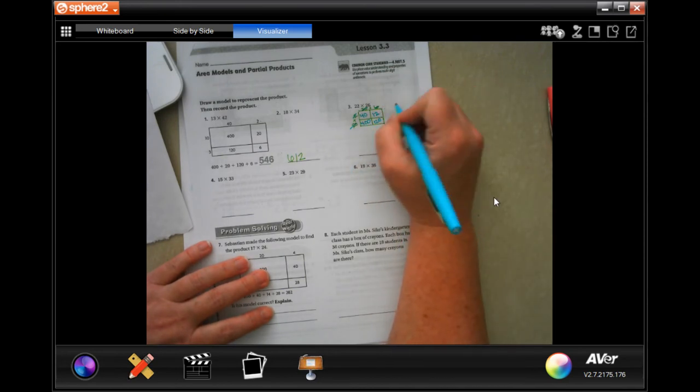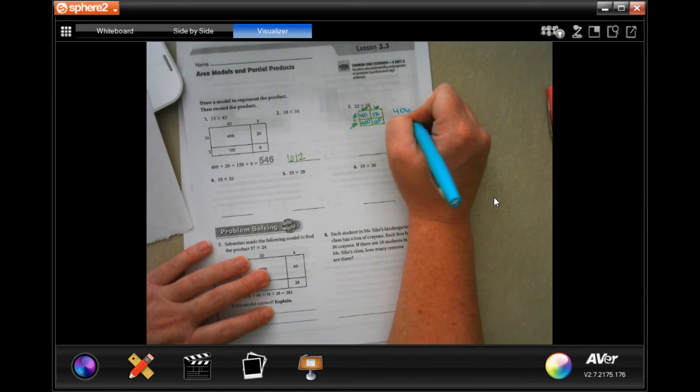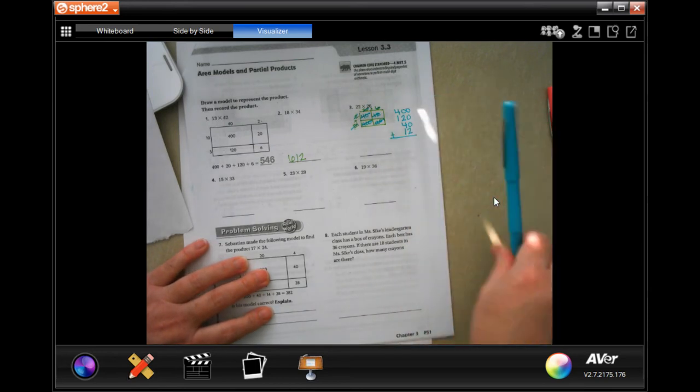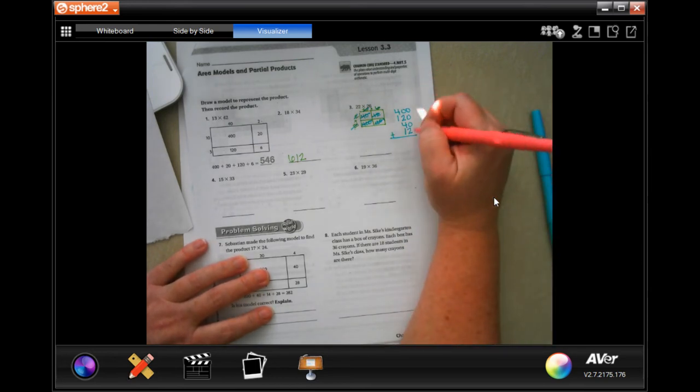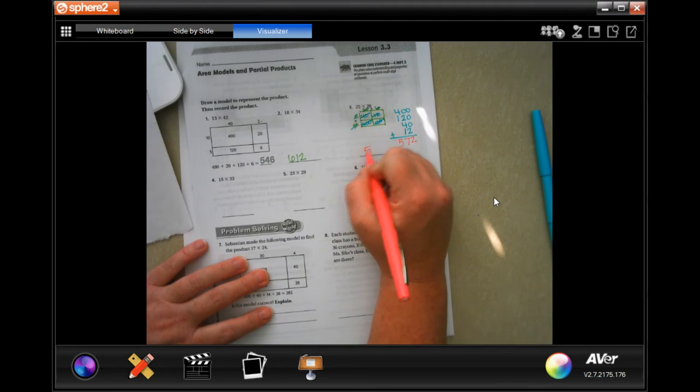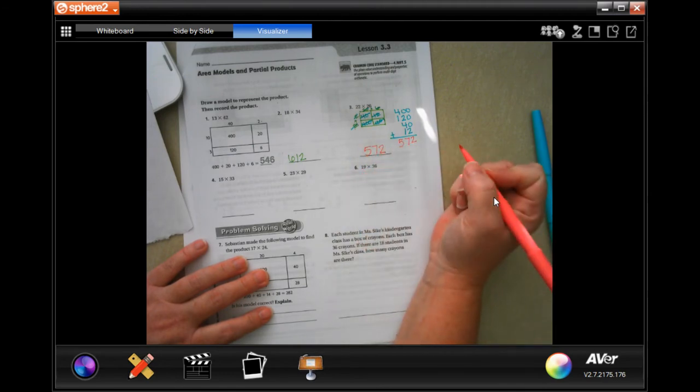Now I'm going to take my biggest one first, which is 400. Done. 120. Done. 40. Done. 12. Done. And I'm just going to add them up. So all the way down 2. 2 plus 4 is 6. Plus one more is 7. And 4 plus 1 is 5. 572.